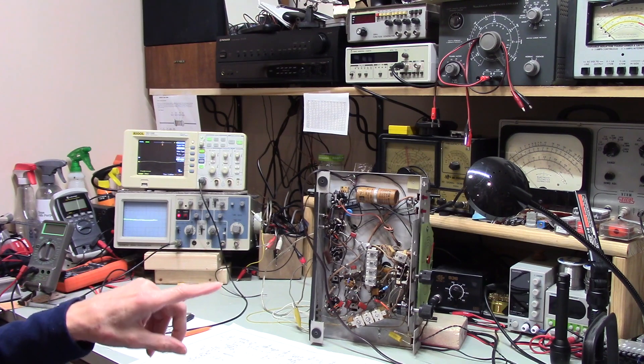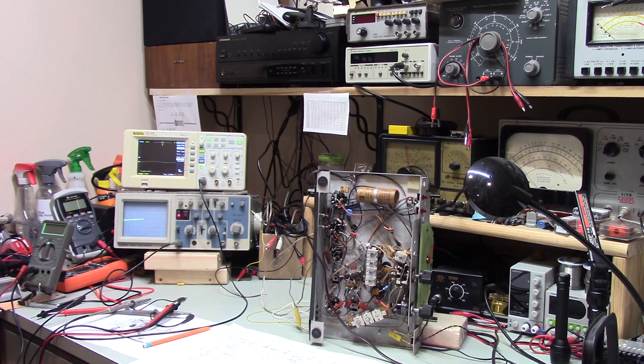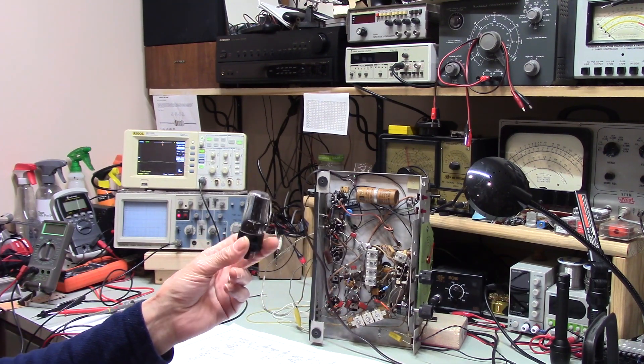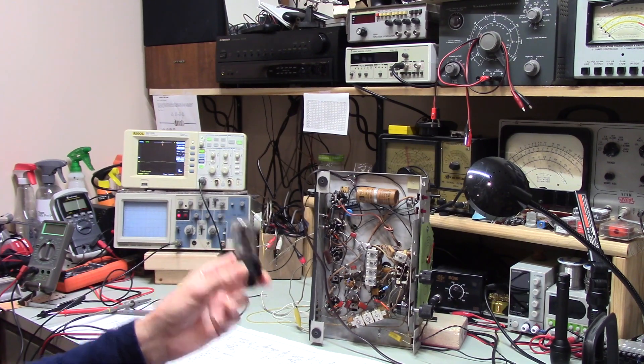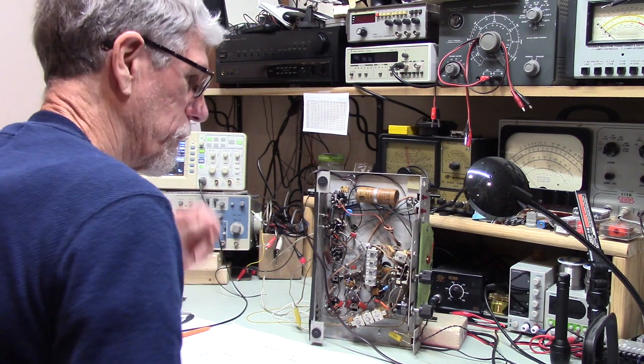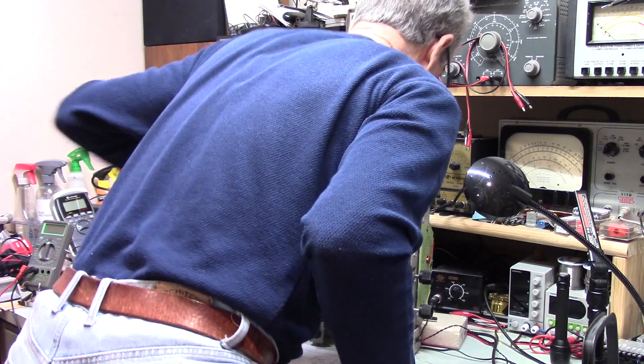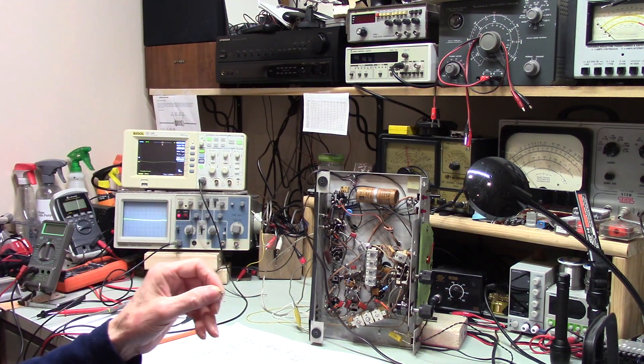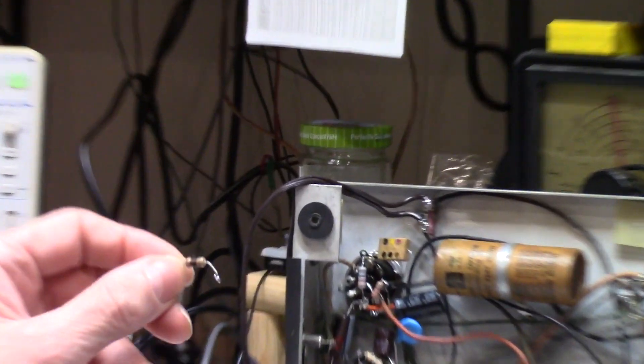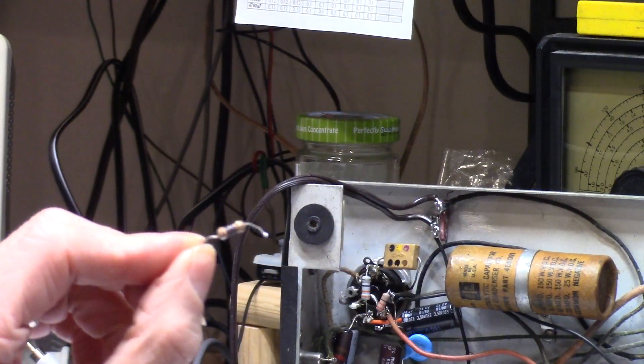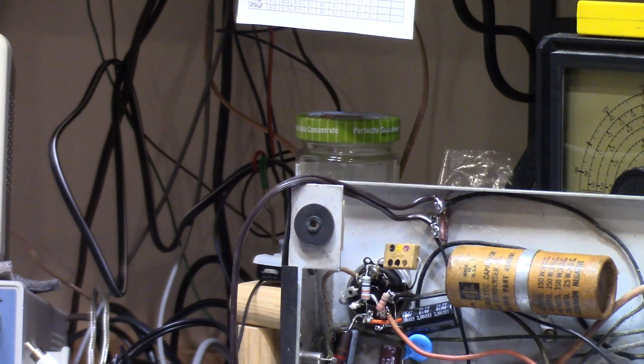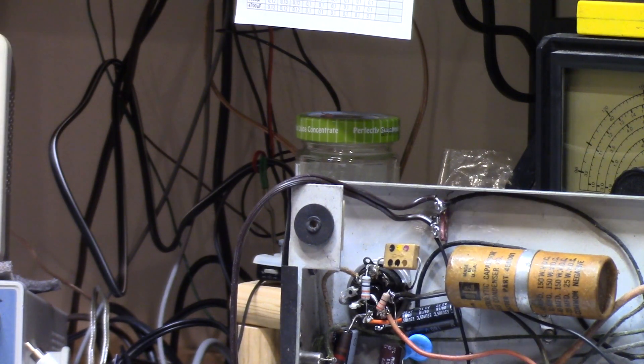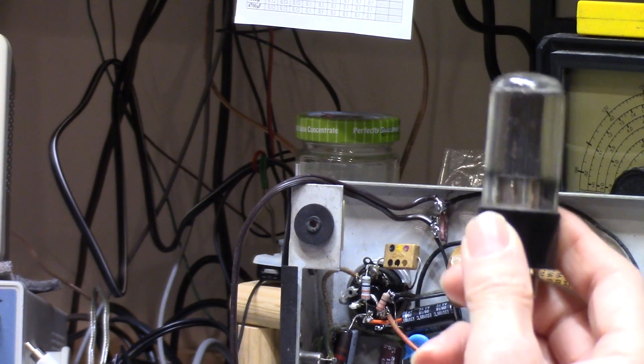But when I fired up this radio, I still don't know exactly what happened. But this tube lit up. It acted like it had fireworks going off inside of it. And then everything died. My brand new 47 bulb went away. And worst of all, the filament in this tube went away.